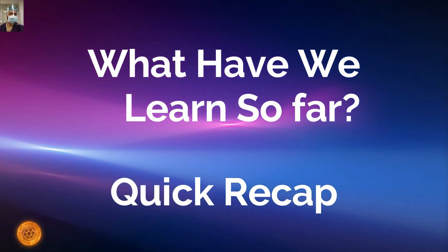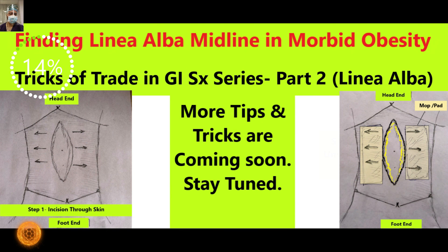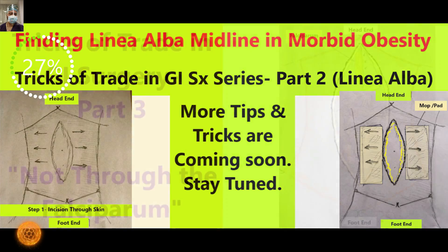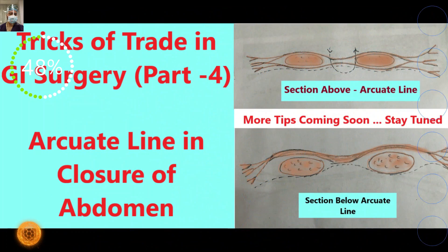A quick recap: in the first part we discussed how to negotiate the oblique while giving midline laparotomy skin incision to avoid an ugly scar. In the second part we discussed how to find the linea alba in morbid obesity patients and to have a bloodless entry into the abdomen. The third short video was about negotiating the falciform while approaching the upper end of the incision. In the fourth part we discussed the anatomical importance of the arcuate line while closing the midline laparotomy.